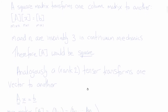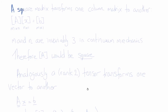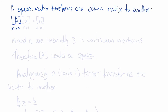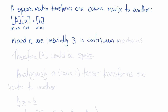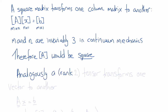A property of a square matrix is that it transforms one column matrix to another column matrix. For example, A times X equals B. If A is an n by n matrix and X is an n by 1 matrix, then B is an n by 1 matrix. In continuum mechanics, m and n are invariably 3, so A is square and B is a 3 by 1 column matrix. In other words, matrix A can take the components of one vector and give the components of another vector. Analogously, a rank 2 tensor transforms one vector to another vector.